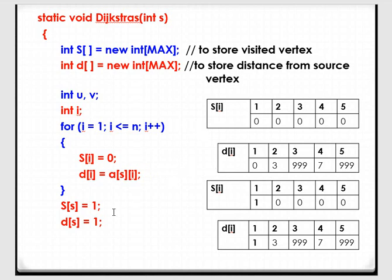Since we selected vertex 1 as the starting vertex, I need to change the value in S — the visited vertex array. I have marked vertex 1 as visited, because vertex 1 is selected as the starting vertex. The uppercase S indicates the array name, and lowercase s indicates the starting vertex. So in place of S[s], we place the value 1. For all other vertices, we keep 0 as it is.